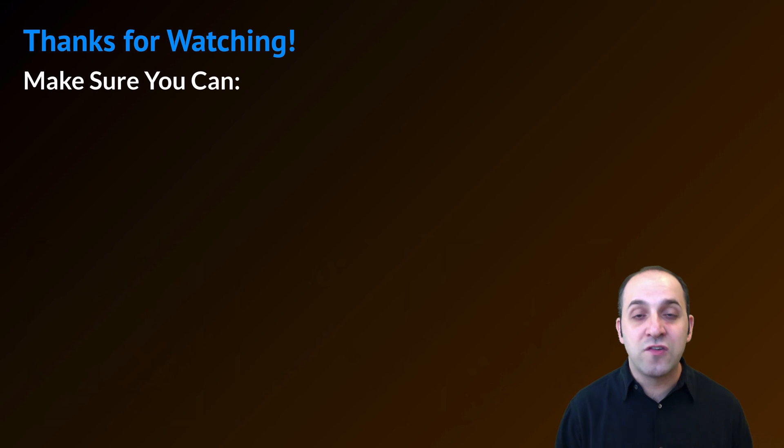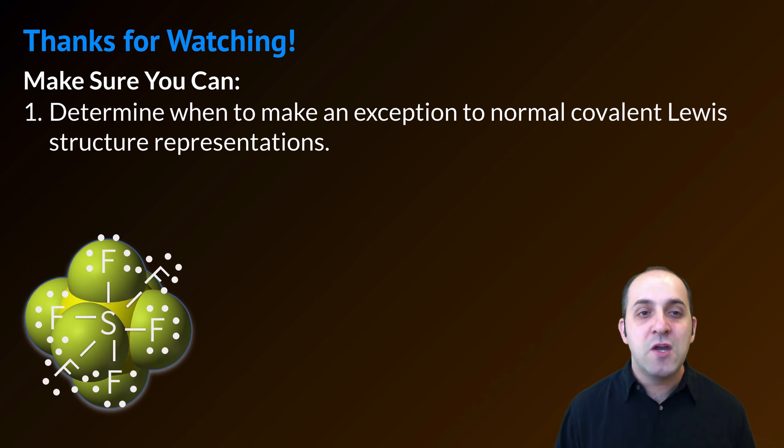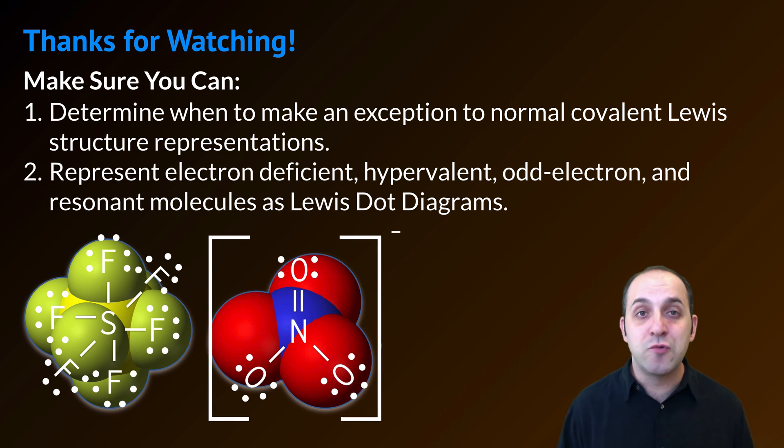Thanks so much for watching our honors discussion here of exceptions to normal Lewis structure rules. Make sure you can do each of the following here at the end. Make sure that you can determine when to make an exception to normal covalent Lewis structure representations. Do you know when you're dealing with a hypervalent structure or a free radical or a resonant structure? Also make sure that you can represent all of the exceptions that we've talked about here as valid Lewis dot diagrams. Can you represent a resonance structure as a dot diagram? How about a hypervalent structure or an electron deficient structure? If you can do these things, you're doing great. If not, that's okay too. Take a moment and write down any questions that you have. You can always leave those questions for me in the comments below the video and you can always get in touch with me through the information in the info field. Thanks again for watching. I really appreciate it. Have a great day.